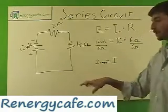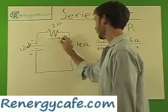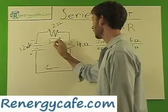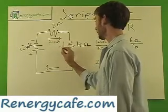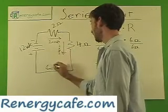Now what we know is that at this point right here, as this current is moving around, we have 2 amps. In here, we have 2 amps. In here, we have 2 amps.